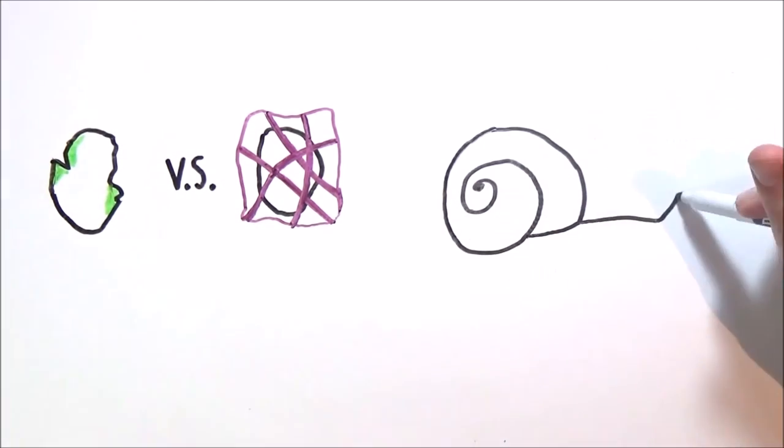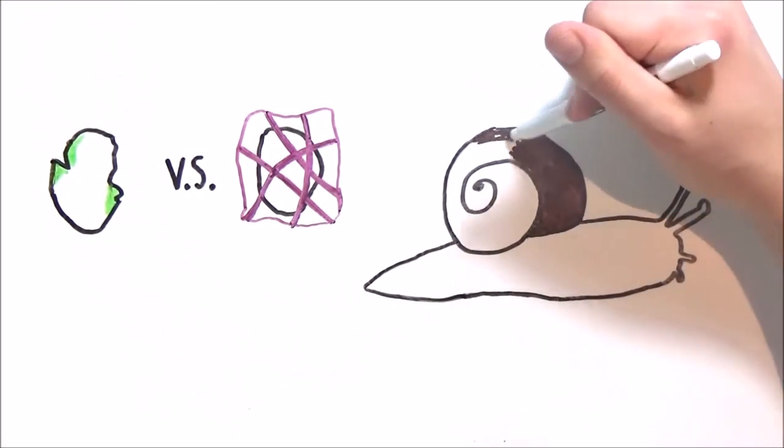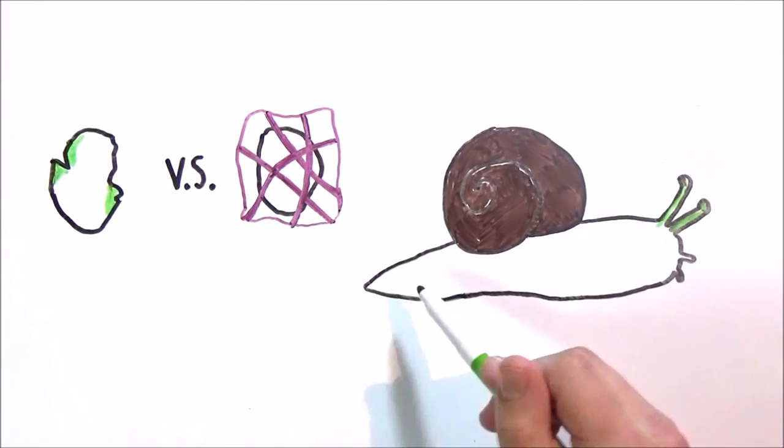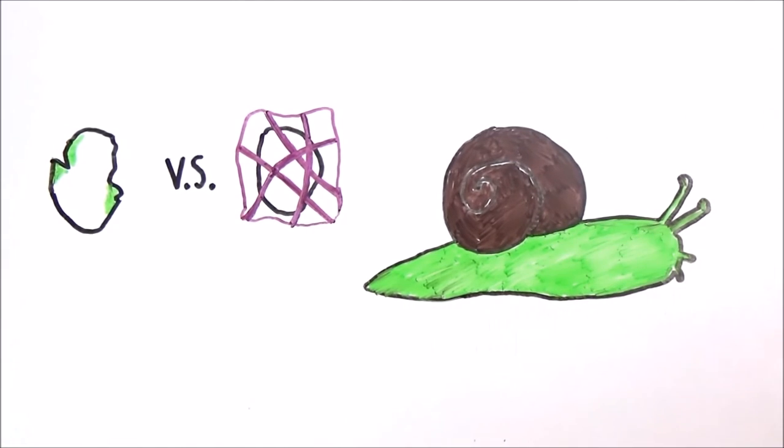Molluscs and crustaceans have known of this advantage for millions of years, having a very similar carbohydrate to amylopectin, chitin, integrated with calcium carbonate in their exoskeletons and shells.